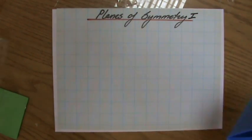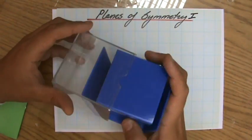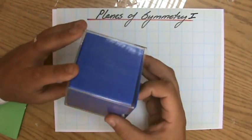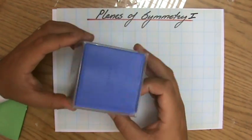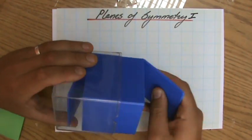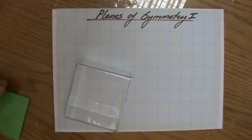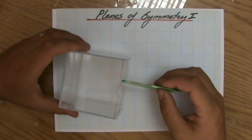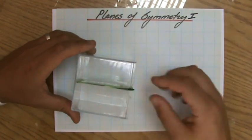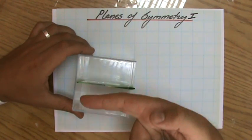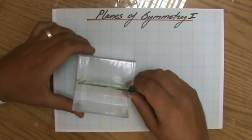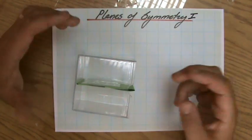We're looking at three-dimensional figures. I have this cube here, which is a three-dimensional square where all the sides are equal in length. The question is: how many planes of symmetry does the cube have? A plane is where one side of the cube will be exactly the same — identical — to the other side of that plane. That's a plane of symmetry.